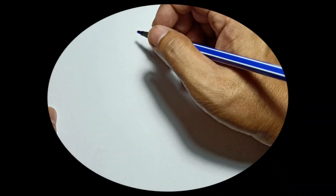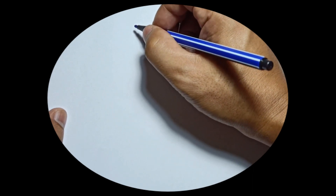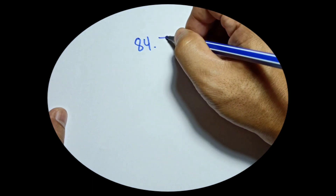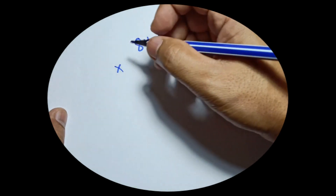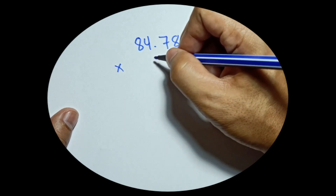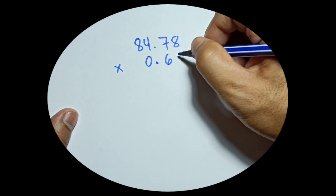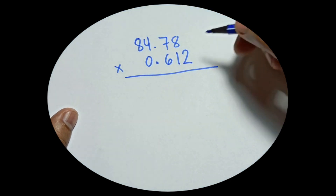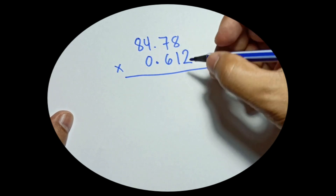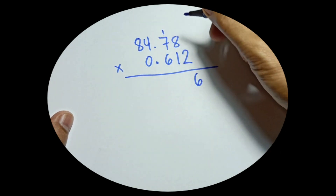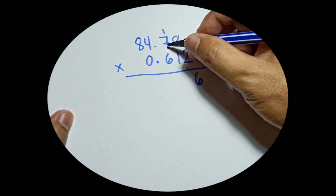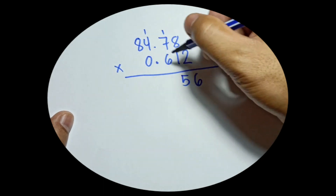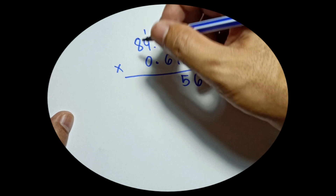For the last example, let's try a more difficult problem: 84.78 times 0.612. Starting with the first digit 2: 2 times 8 is 16, carry 1 on top of 7. 2 times 7 is 14 plus 1 is 15, carry 1 on top of 4. 2 times 4 is 8 plus 1 is 9. Then 2 times 8 is 16, write 16.